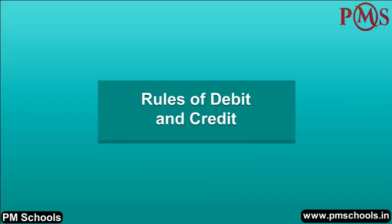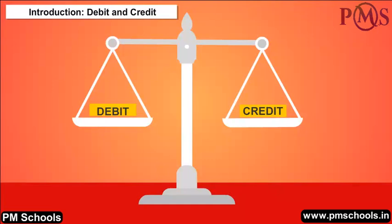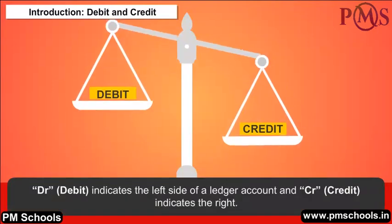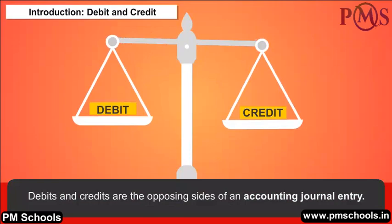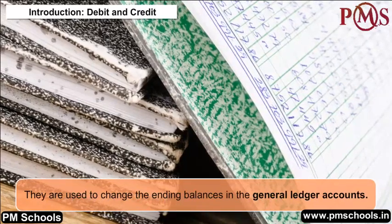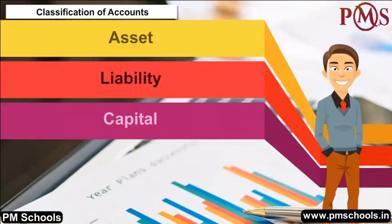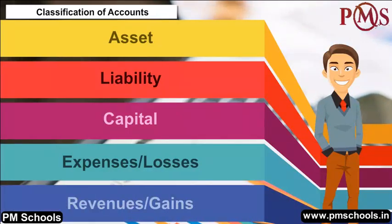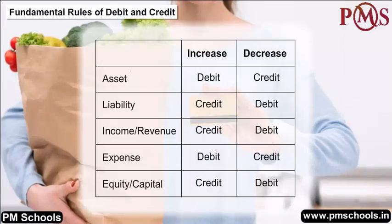Rules of Debit and Credit: In financial accounting or bookkeeping, debit indicates the left side of a ledger account and credit indicates the right. Debits and credits are the opposing sides of an accounting journal entry and are used to change the ending balances in general ledger accounts. All accounts are divided into 5 categories: asset, liability, capital, expenses or losses, and revenues or gains.